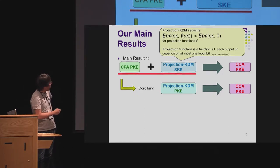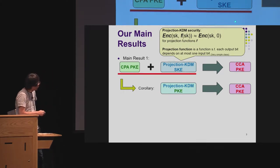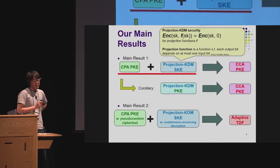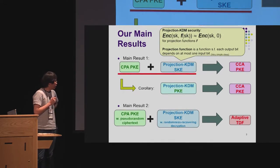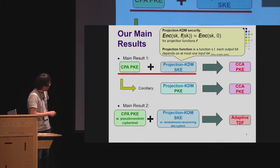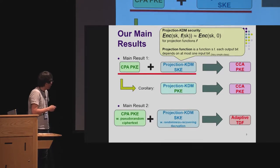As a direct corollary, we obtained a construction based only on projection-KDM-secure PKE, since this primitive trivially implies both building blocks. As a second main result, we obtained the construction of an adaptively one-way secure trapdoor function by requiring some additional assumptions on each building block. For PKE, we require a pseudorandom ciphertext property, which I will explain later. And for SKE, we additionally require a randomness-recovering decryption property.